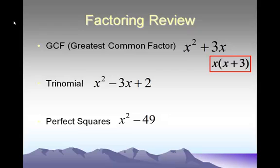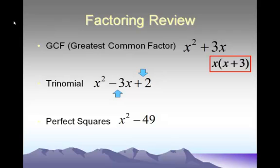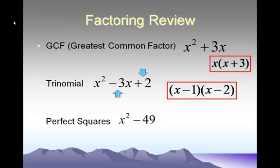The second type of factoring we're going to review is trinomial factoring. A trinomial has three terms. For x squared minus 3x plus 2, focus on the end number first. Positive 2 is made by 1 times 2. We also need to add up to make the middle number, negative 3. The only way to get 1 and 2 to add up to negative 3 is if both are negative. So the factors are (x minus 1) and (x minus 2).